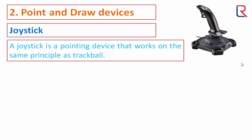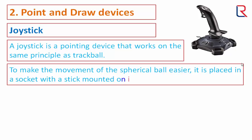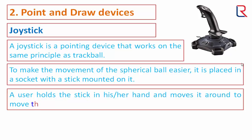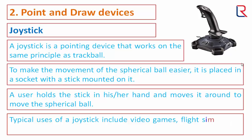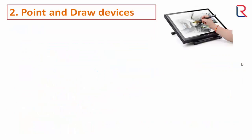Joystick: a joystick is a pointing device that works on the same principle as a trackball. To make the movement of the spherical ball easier, it is placed in a socket with a stick mounted on it. A user holds the stick in hand and moves it around to move the spherical ball. Typical uses of a joystick include video games, flight simulators, training simulators, and remote control of industrial robots.